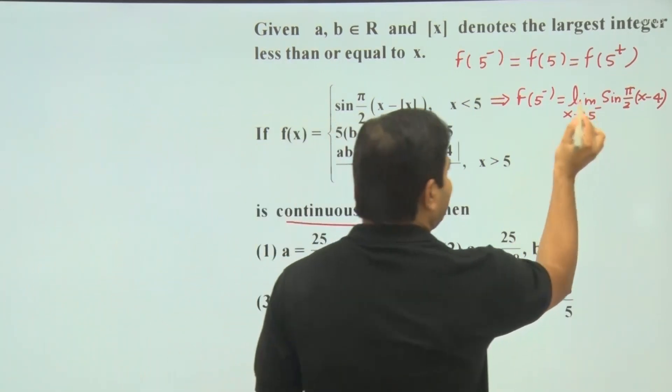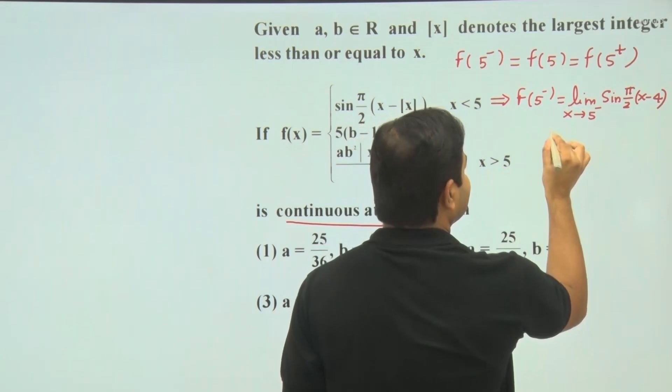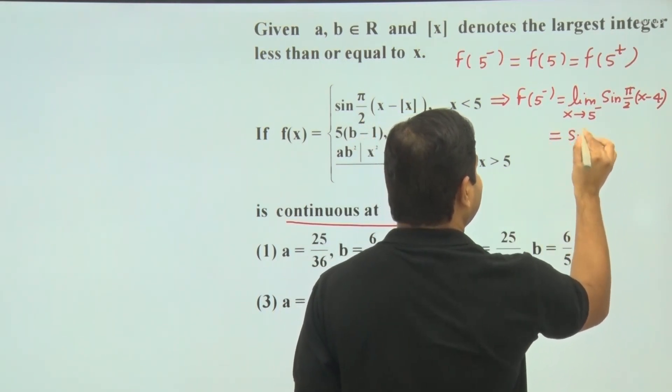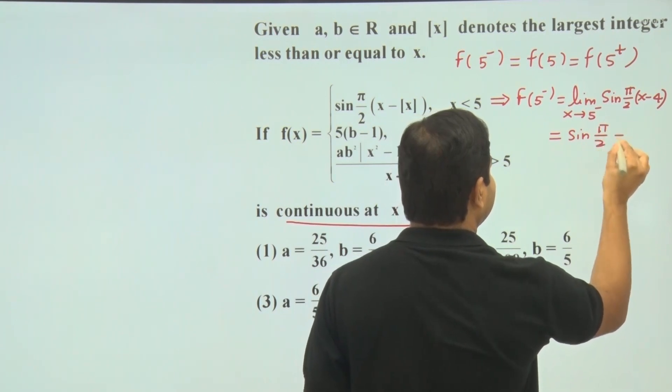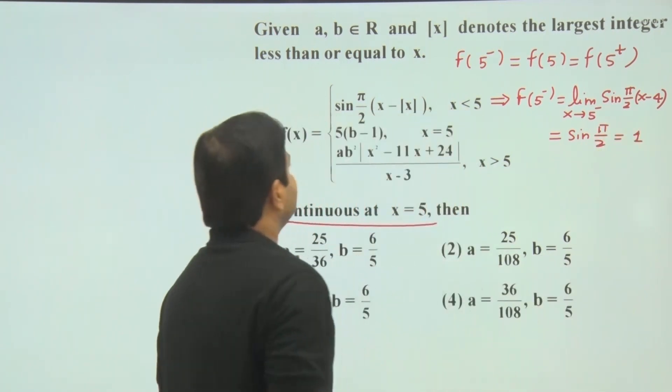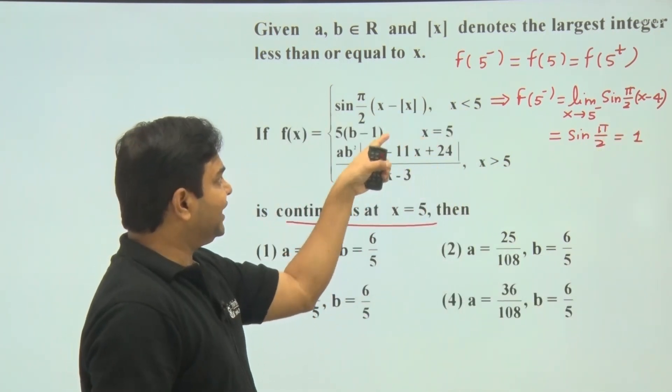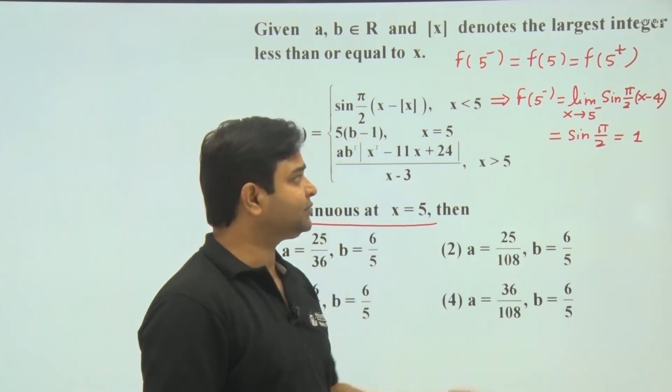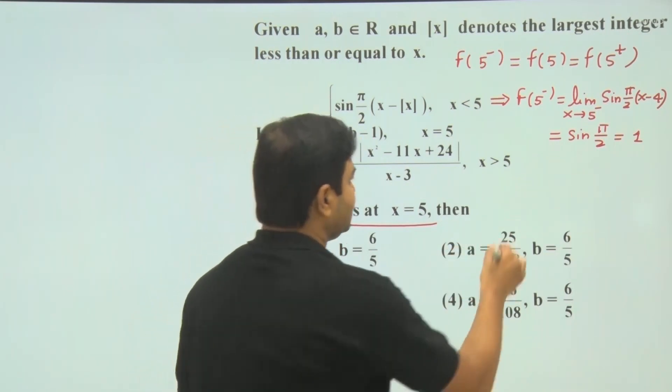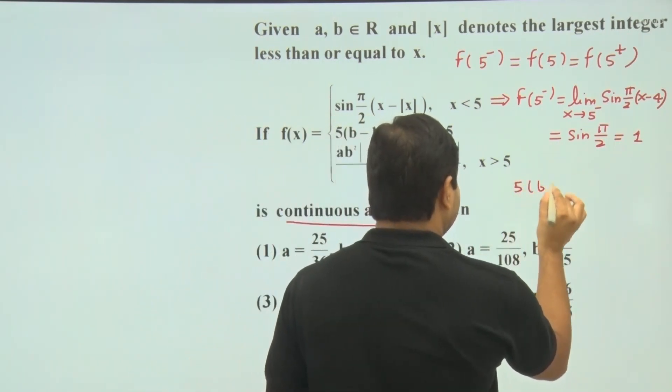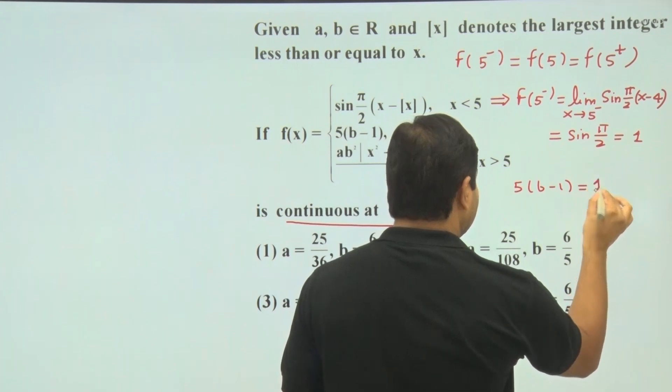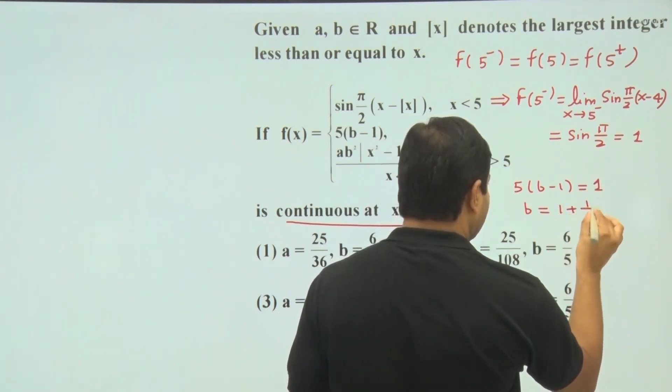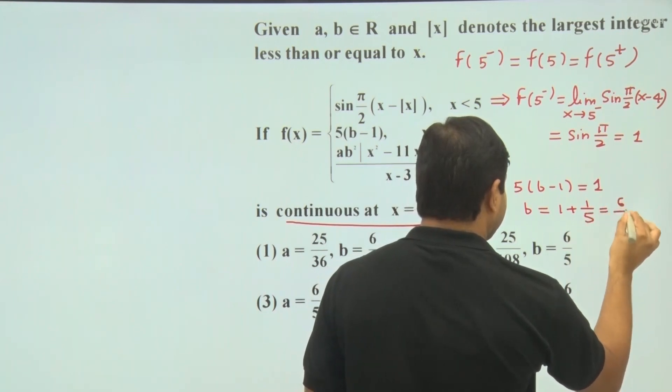Now if we put x equals 5 here, then this will give sin π/2, and sin π/2 we know is 1. So at x equals 5, this function value is 5 times b minus 1. So 5 times b minus 1 must equal 1. From here, 5 into b minus 1 equals 1, value of b is 1 plus 1/5, and that is 6/5.